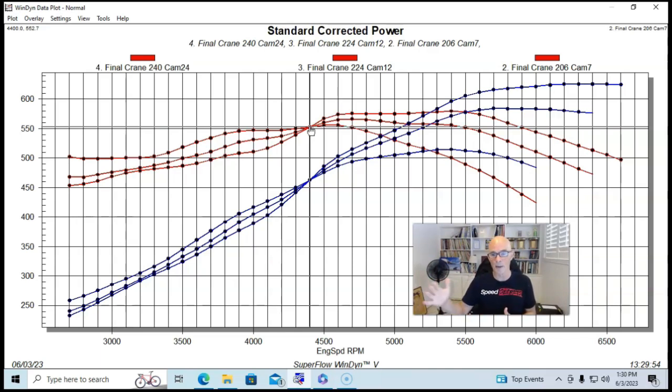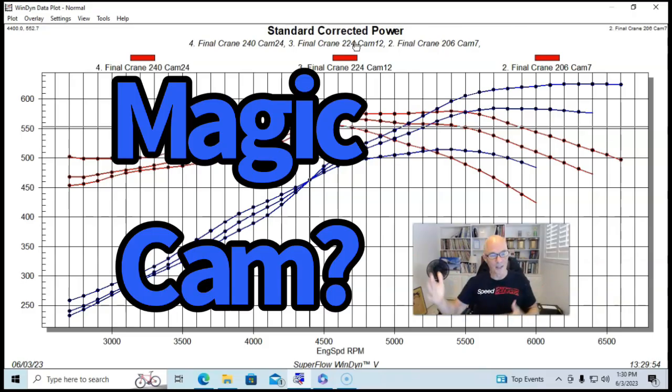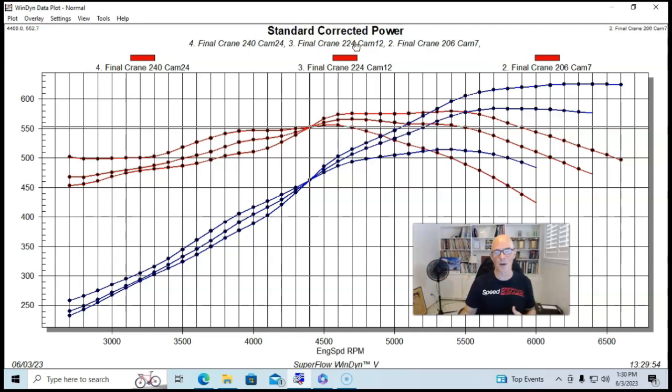I would pick the bigger 240 cam because it makes more power than the 224 cam from that point on all the way up. So if you're looking for performance, that's definitely the way to go. But if we look at the RPM range below that, the bigger camshaft definitely making less torque than the 224 cam and a lot less torque than the smaller 206 cam. So it's very important. And unfortunately, there's no like magic camshaft here that's going to give us all of one and all of the other in terms of horsepower and torque.